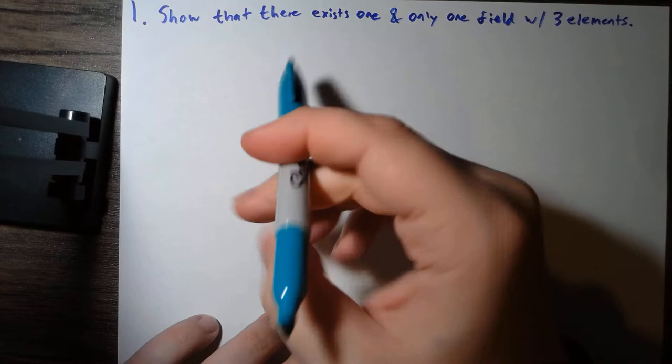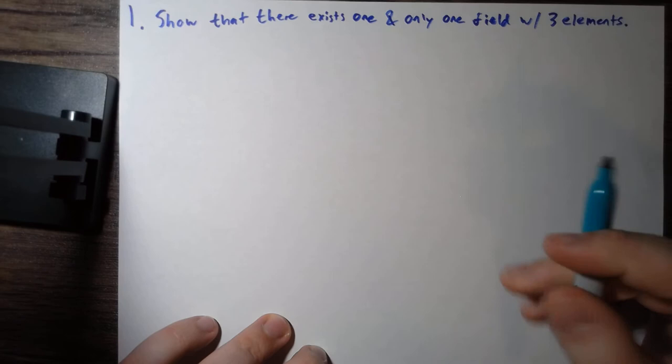All right, we're going to do problem one from chapter two of Rosen-Lynch. This problem asks that we show that there exists one and only one field with three elements.